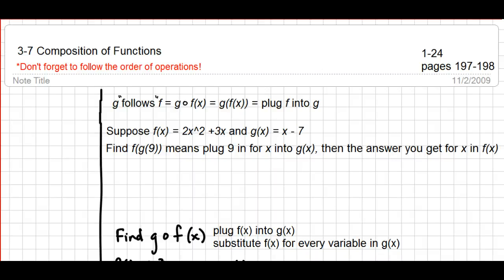This lesson is for FST lesson 3.7 on composition of functions. One of the biggest issues that students have with this lesson is they forget to follow the order of operations. So just a quick reminder: when you're simplifying anything, make sure that you do follow that.